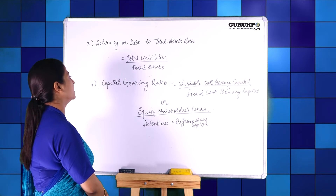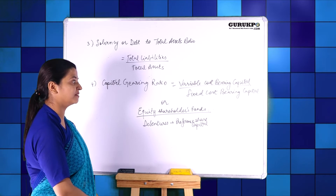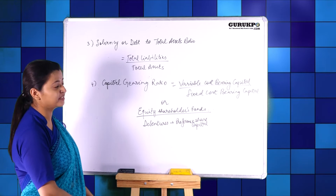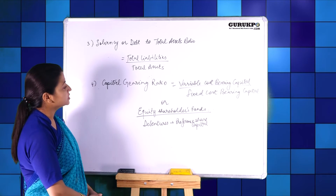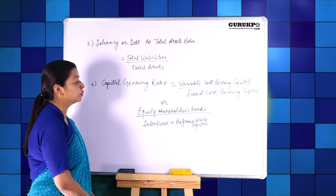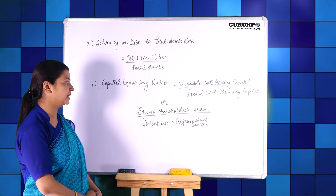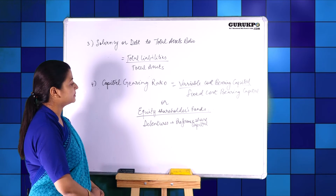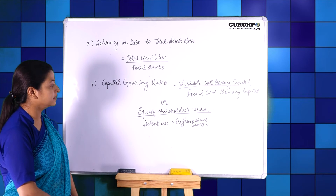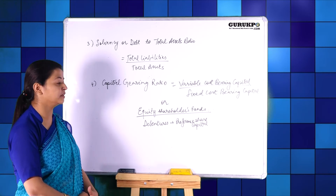The next ratio is the capital gearing ratio. Its formula is variable cost bearing capital divided by fixed cost bearing capital. It expresses a relationship between variable cost and fixed cost capital. Variable cost bearing capital includes equity shareholders' funds, because equity shareholders do not have a fixed rate of dividend — it depends on the profit of the company. Fixed cost bearing capital means debentures and preference share capital, because these include a fixed rate of interest and a fixed rate of dividend respectively.